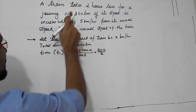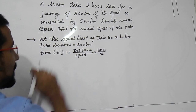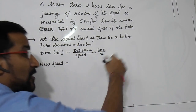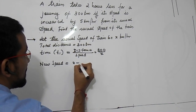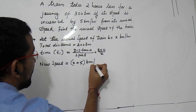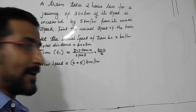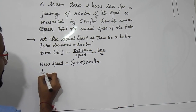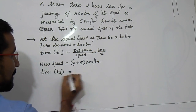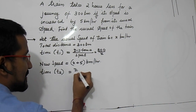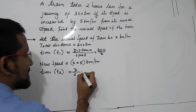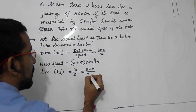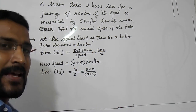It is given that the speed is increased by 5 km per hour. So the new speed will be x plus 5 km per hour. Now the new time T2 will again be distance divided by speed. The distance remains the same — 300 km — but the speed is now x plus 5. So T2 equals 300 divided by (x plus 5).